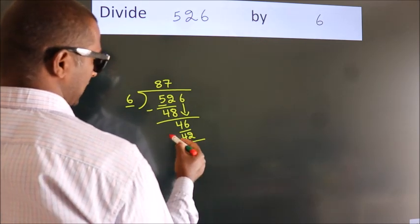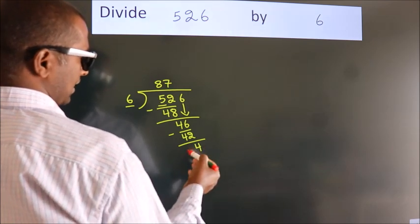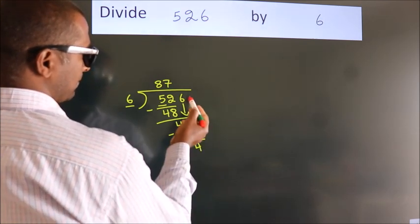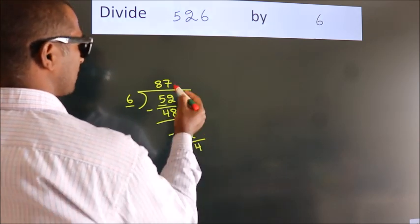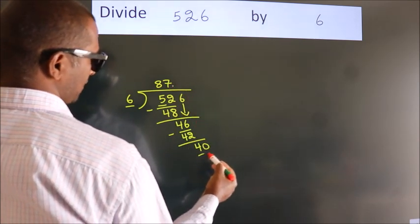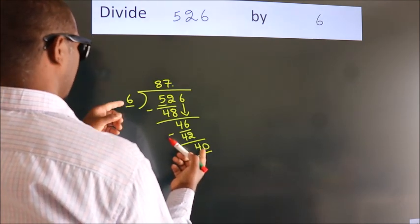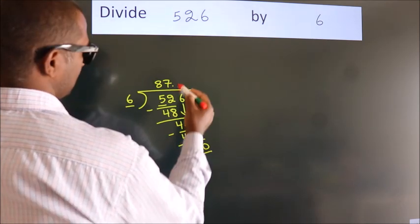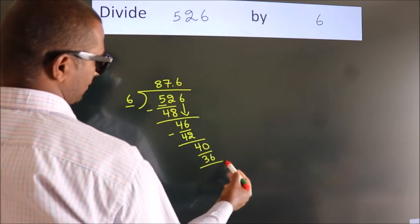Now we subtract, we get 4. After this, no more numbers to bring down, so what we do is we put a dot and take zero. So 40. A number close to 40 in the sixth table is 6 times 6 equals 36.